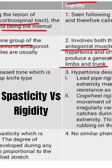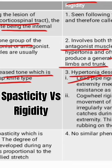Spasticity is a state of increased tone described as clasp-knife rigidity, whereas in rigidity the hypertonia is described in two types: lead-pipe rigidity and cogwheel rigidity.